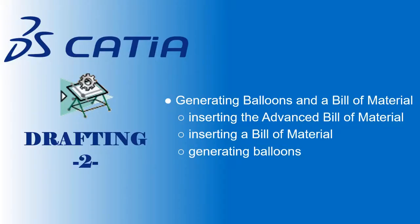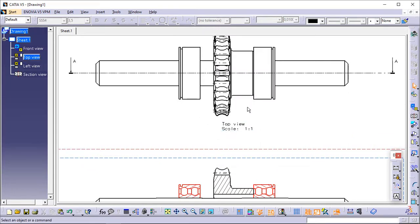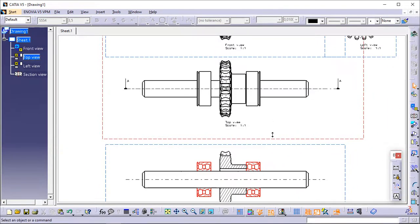Generating balloons and a bill of material. This task will show you how to insert the advanced bill of material, insert a bill of material, and generate balloons. The top view, in which you will generate the balloons and the bill of material, should still be active from the previous task. If not, double-click it to activate it.